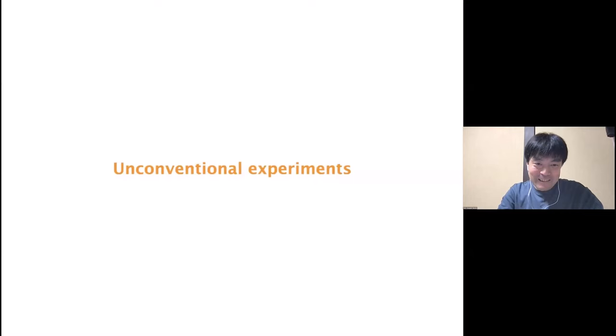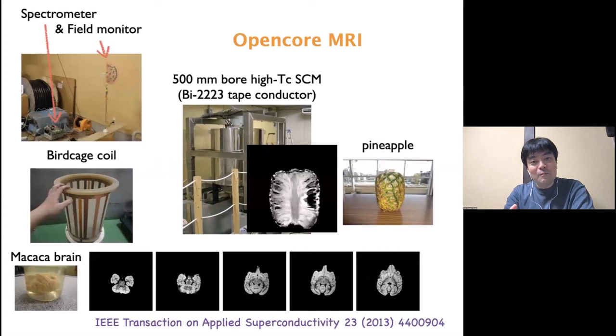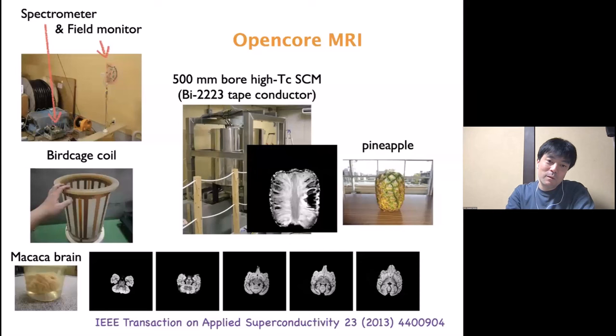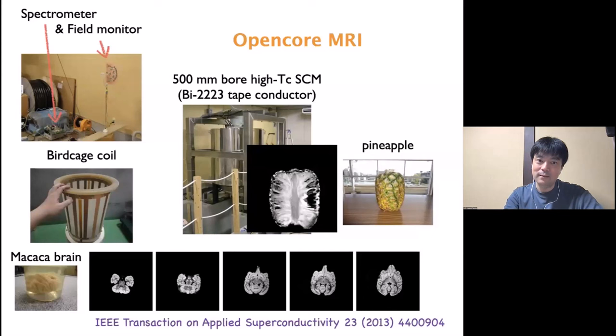I'd like to focus on some unconventional experiments, because this is the most interesting part — we can modify the hardware according to our ideas. One application is MRI: MRI experiments require only a single RF channel, so the amplitude control of the other channels is utilized as a gradient waveform generator. And NMR imaging experiments were successful.